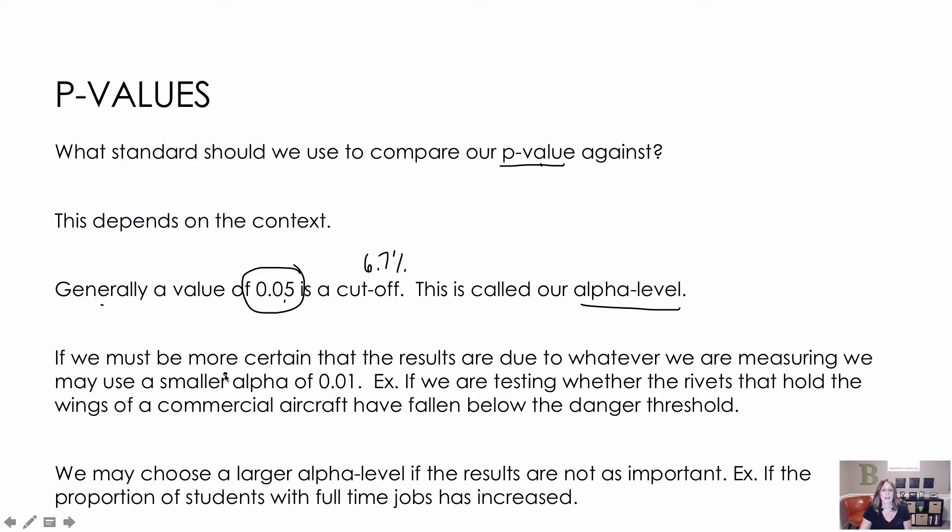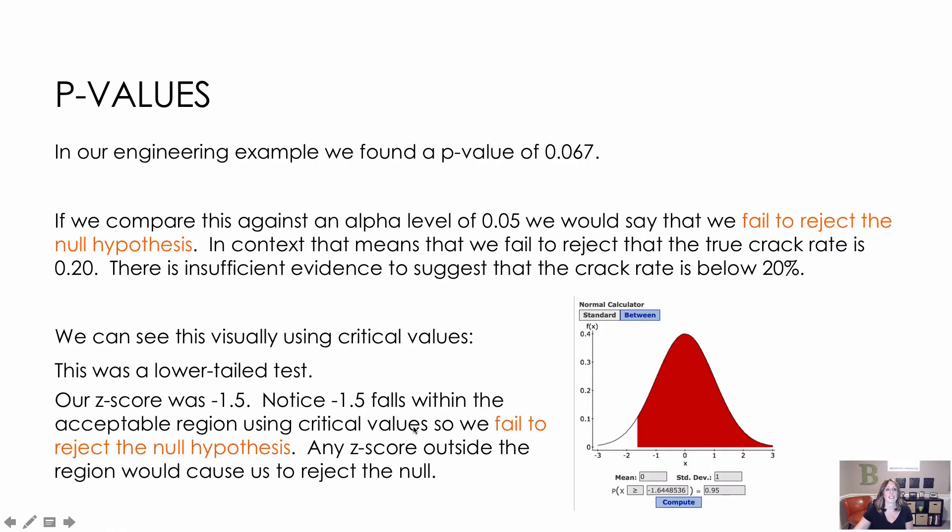So it really is based on whatever our alpha level is. Now, if you need to be more precise based on whatever the context is, they might use a smaller alpha. If it's not like a life or death situation, maybe we use a larger alpha of like 10%.